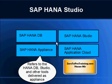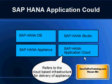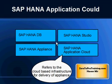SAP also offers the SAP HANA Appliance. The term 'computer appliance' refers to the marriage of hardware and software especially tuned for that hardware. There are certified vendors that offer hardware on which SAP HANA software can be installed. The appliance is that special hardware from certified vendors with SAP HANA software installed and tuned on top of it. The SAP HANA software is also available on a cloud infrastructure known as SAP HANA Application Cloud.